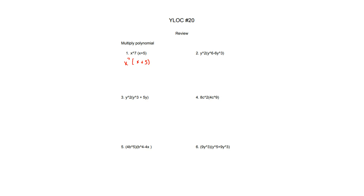So to multiply it, you're just going to distribute. Multiply x to the power of 7 with the x, then multiply it with the 5. So it becomes x to the power of 8 plus 5 times x to the power of 7. Just remember that if you have the same base and you're multiplying, you can just add the exponents together. So this is your answer for number 1.